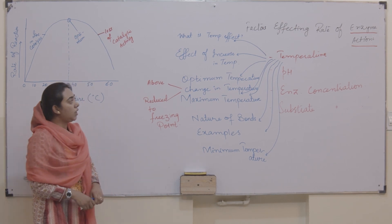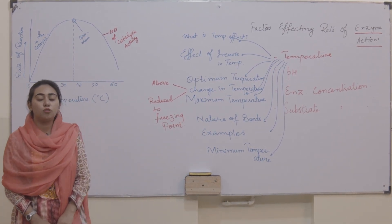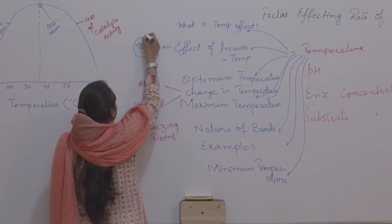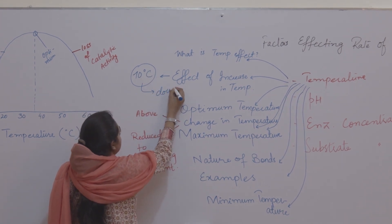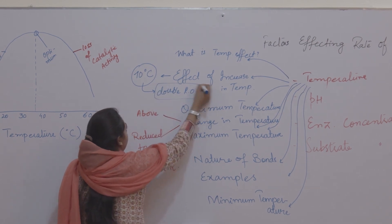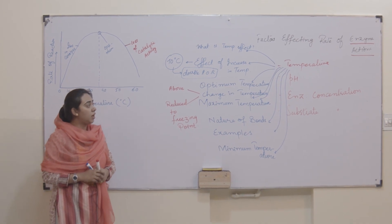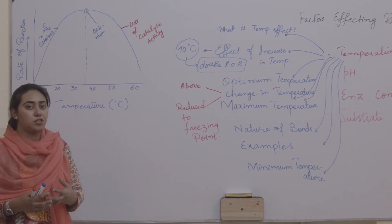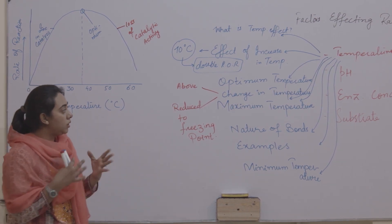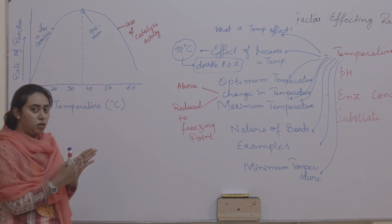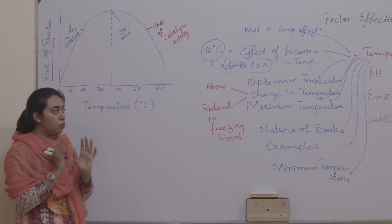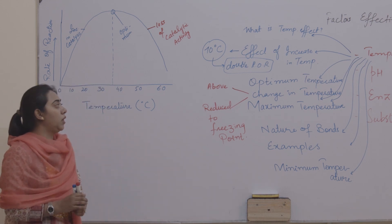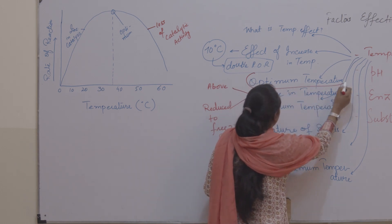Now what happens if we increase temperature? We say that initially, when we increase the temperature up to 10 degrees Celsius, an increase in temperature of 10 degrees Celsius is going to double the rate of reaction. When we keep increasing temperature, there comes a clicking point — a temperature at which the enzyme is going to show its maximum capacity of working, where the enzyme shows maximum activity. That temperature at which the enzyme shows maximum rate of reaction is known as the optimum temperature.